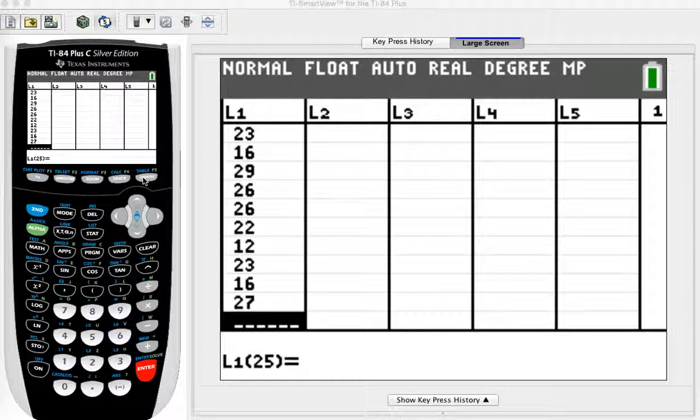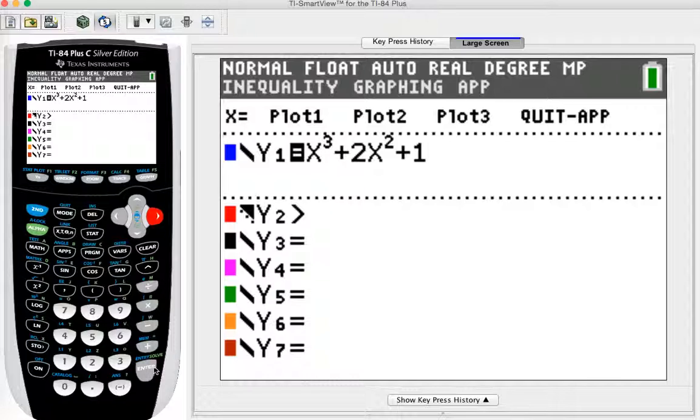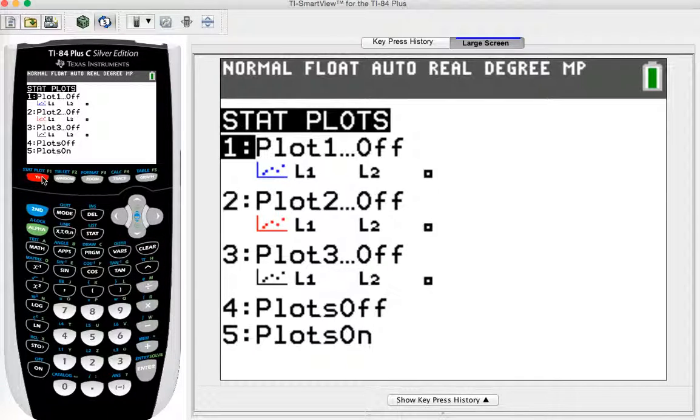So I'm going to be graphing. The first thing I want to do is go to Y equals, and anything that's here I need to remove. So I'll click the right button and then hit clear so that that's all cleared because I don't want that line to graph. Next I need to go to stat plot, and because it's above the Y equals, I have to do second Y equals to get to stat plots.